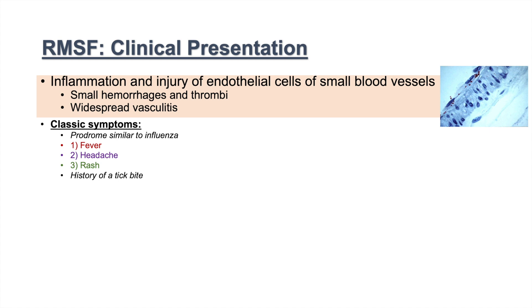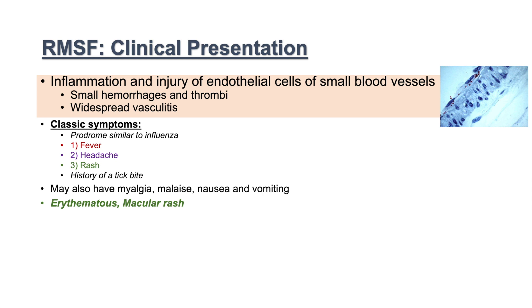If you see fever, headache, and rash in a person with a history of a tick bite, think Rocky Mountain Spotted Fever. A person may also have myalgia, malaise, nausea, and vomiting. The rash is erythematous and macular, and it generally occurs at three to five days of infection, so it's not a good early diagnostic characteristic. Some individuals don't get this rash at all.